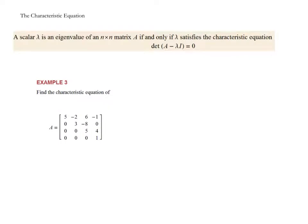Now we get to the main topic: the characteristic equation. A scalar lambda is an eigenvalue of an n×n matrix if and only if it satisfies the characteristic equation det(A − λI) = 0. When you compute that determinant and set it equal to zero, that equation is called the characteristic equation. In example 3 we'll find the characteristic equation of a triangular matrix, which is a bit easier to work with.